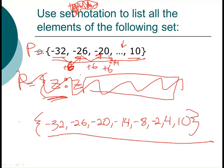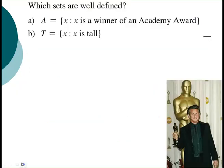When it doesn't say set builder, you're just listing the elements of the set. Let's continue. So we've got which sets are well defined. So these are two different sets and we're just deciding is one of them defined well or is one not.